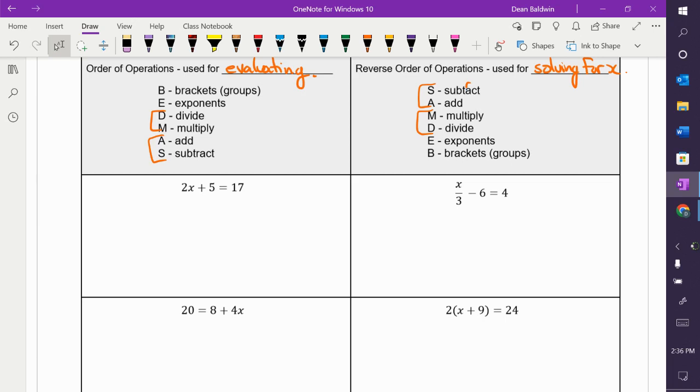Remember, you do the opposite or the inverse operation. What's the opposite of addition? Subtraction. So, I subtract 5 from both sides. Nothing happens to the 2x. It just stays there. The subtraction of 5 makes that 5 go away. And on the other side, 17 minus 5 is? 12.